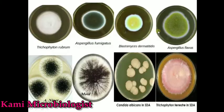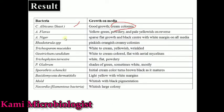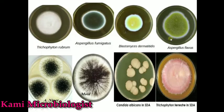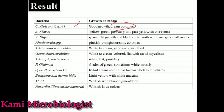Aspergillus niger shows sparse flat growth with a black center and white margin on the media. As you can see, the blackish-white colonies — these are the growth of Aspergillus niger.